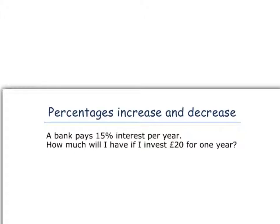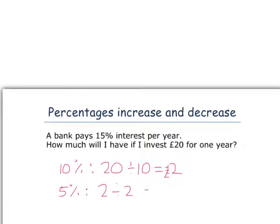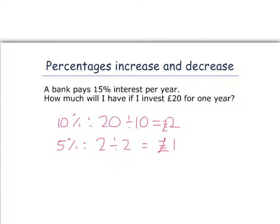So, a 15% increase. We need to figure out what is 15% of £20. To do that, we find 10% by dividing by 10, which is £2. And we need to find 5%, which is half of our 10%, which is £1. So all in all, 15% is going to be our 10% add-on our 5%, which is £3.